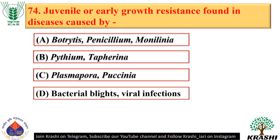Question number 74. Juvenile or early growth resistance found in diseases is caused by Botrytis, Penicillium, and Monilinia — option A.